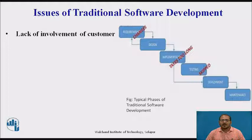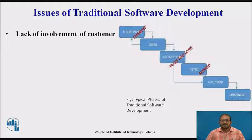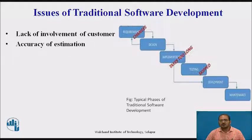Another issue is the lack of involvement of the customer. Traditionally, customers are involved in the initial requirement phase and may or may not be involved during the design and coding phase. They come back and get involved in the final user acceptance testing phase. In between, there is a big gap between the development team and the customers, and the customers keep waiting to see the product for a long time. The accuracy of estimation is also a problem — when you start with unclear requirements, your estimation cannot be very accurate.